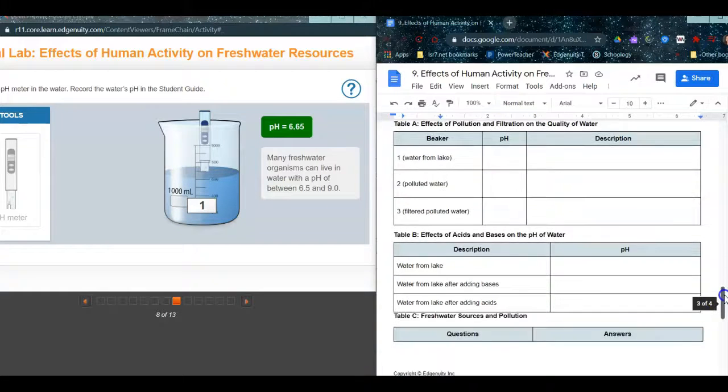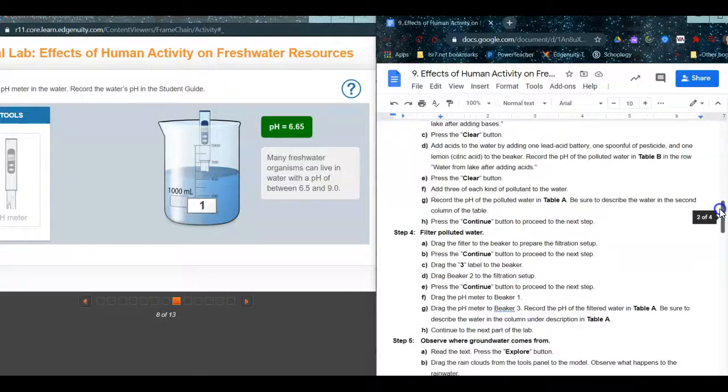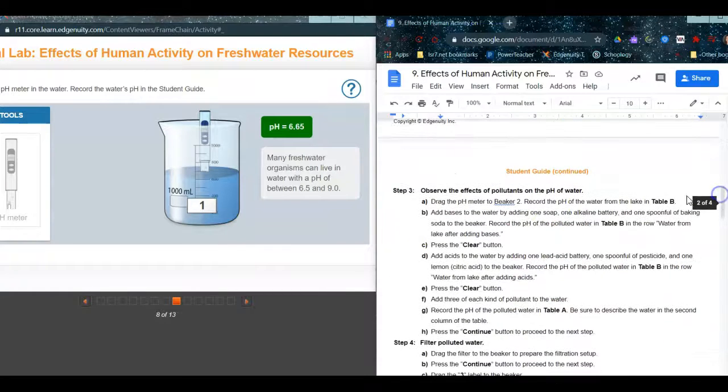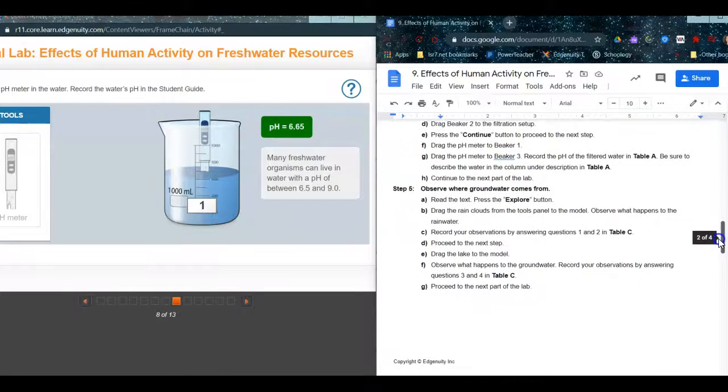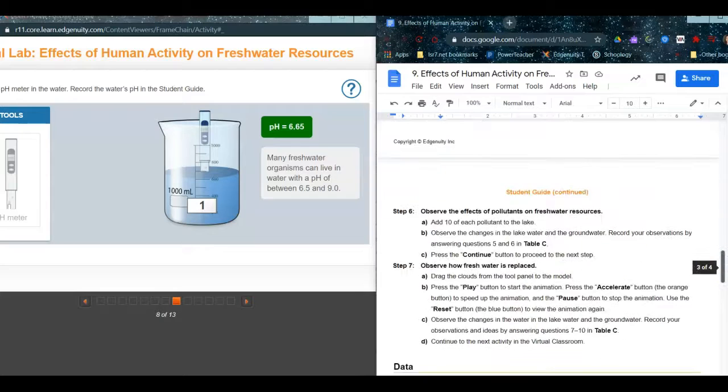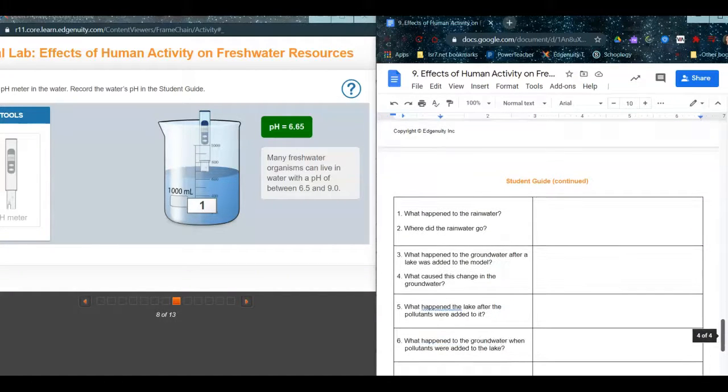So let's see, you're going to use table B with step 3, and then you're going to go back to table A, and then table C is when you're going to record some more stuff. So for table C, you're going to answer some questions when you get towards the end about rainwater and groundwater.